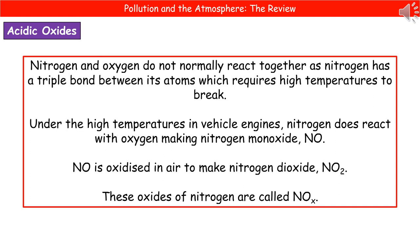The third type of pollutant we're going to look at are the acidic oxides. Nitrogen doesn't normally react with oxygen because the nitrogen atoms within nitrogen gas have a triple bond holding them together, which requires quite a lot of energy to break — temperatures don't normally get that high in the everyday environment. However, under the high temperatures inside vehicle engines, nitrogen does react with oxygen and forms nitrogen monoxide, NO. Nitrogen monoxide is then oxidized in air to make nitrogen dioxide, NO₂. These two oxides of nitrogen are collectively referred to as NOx.